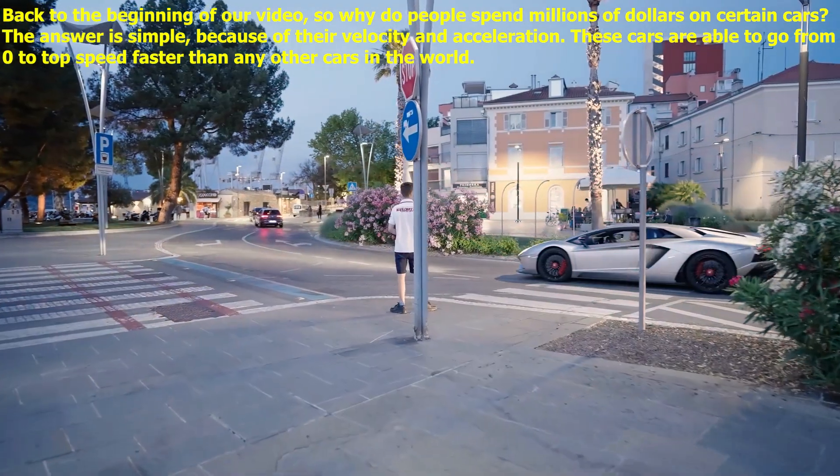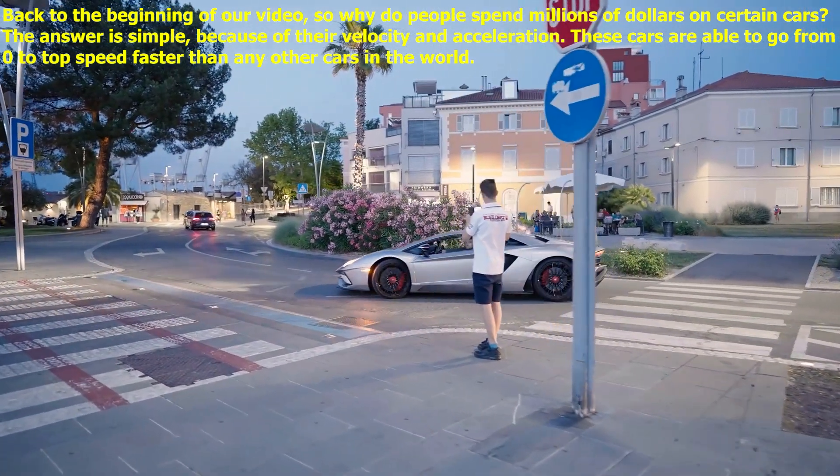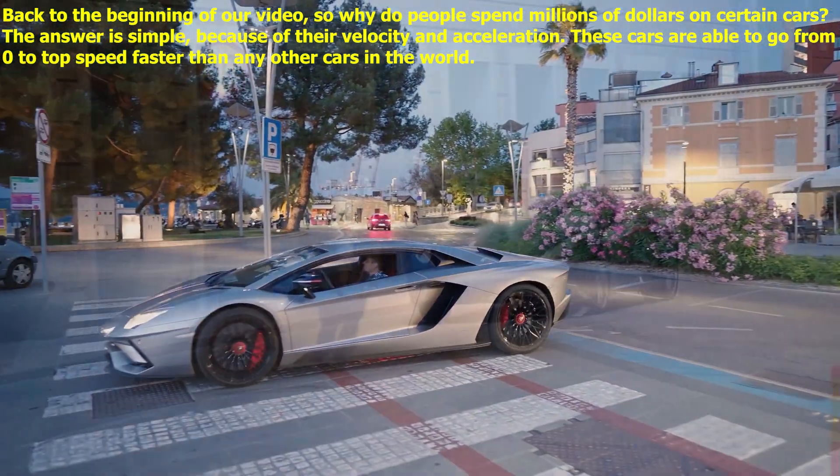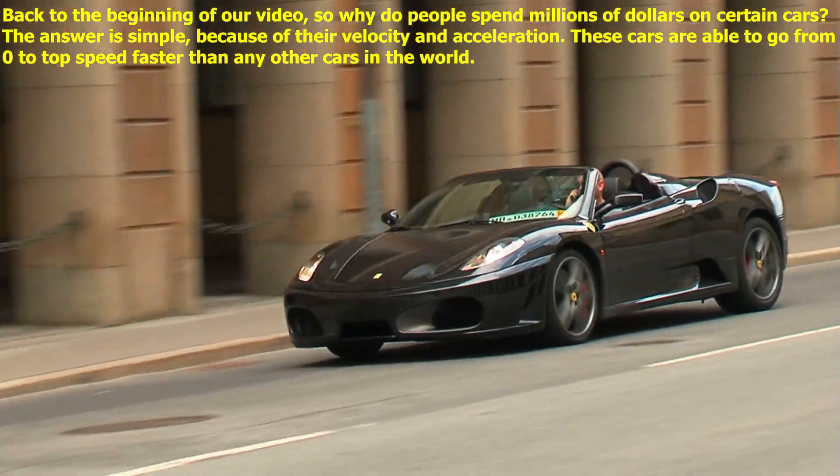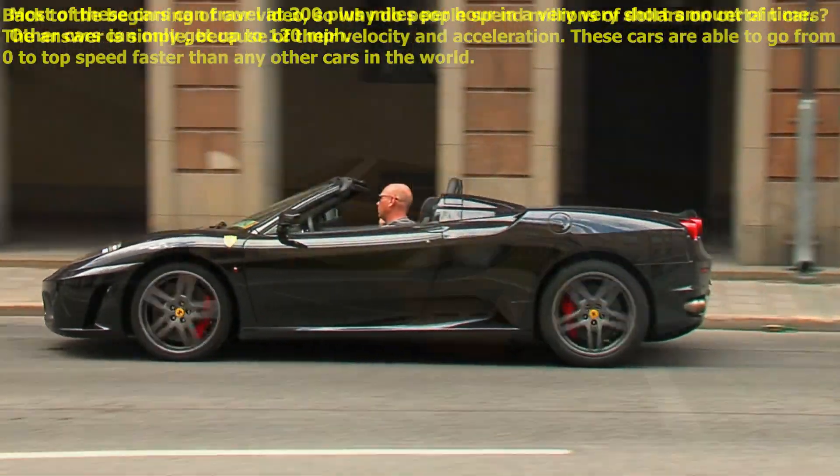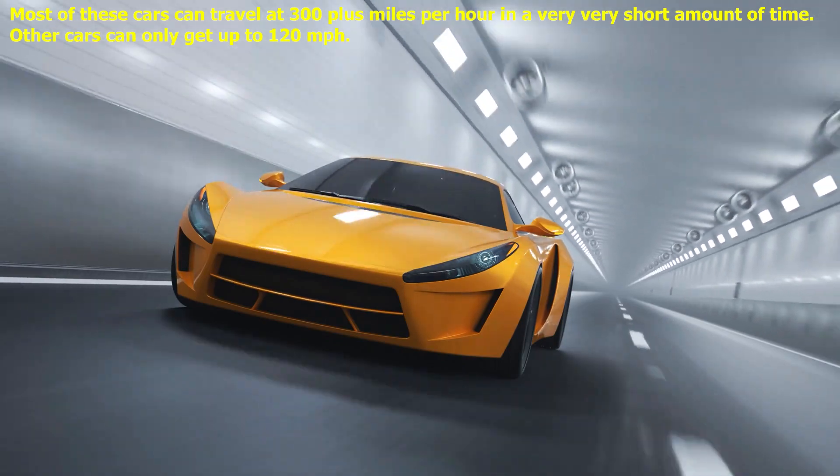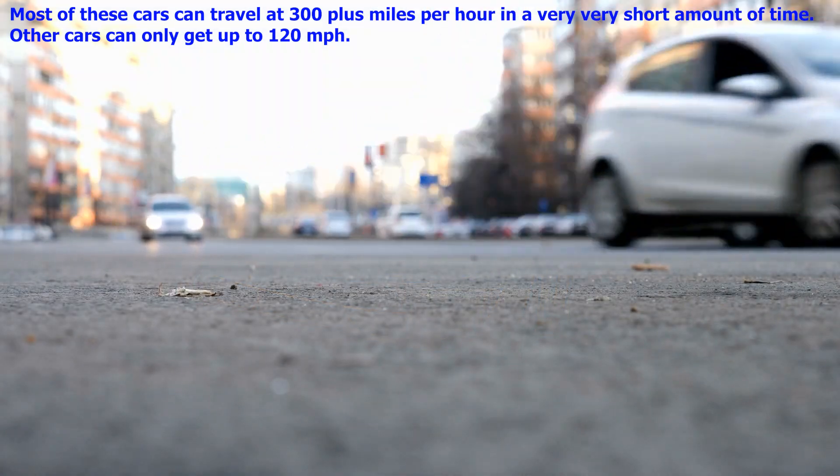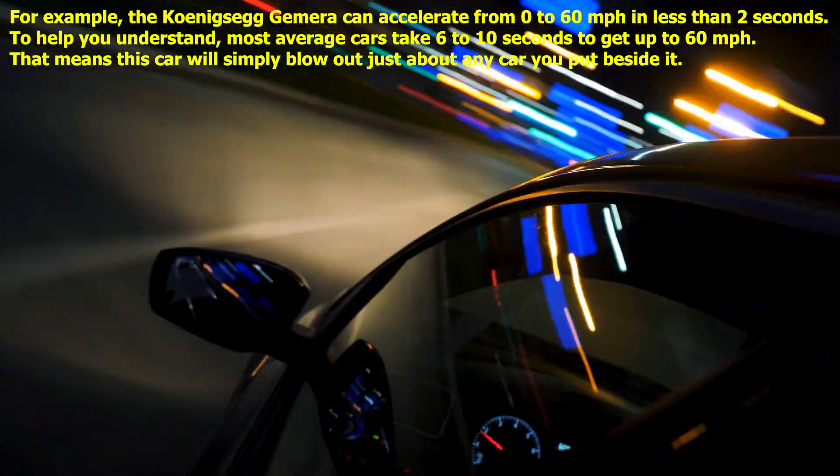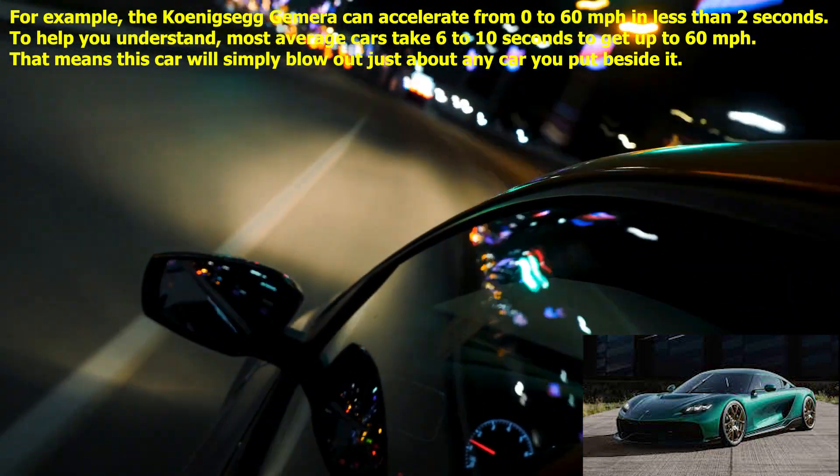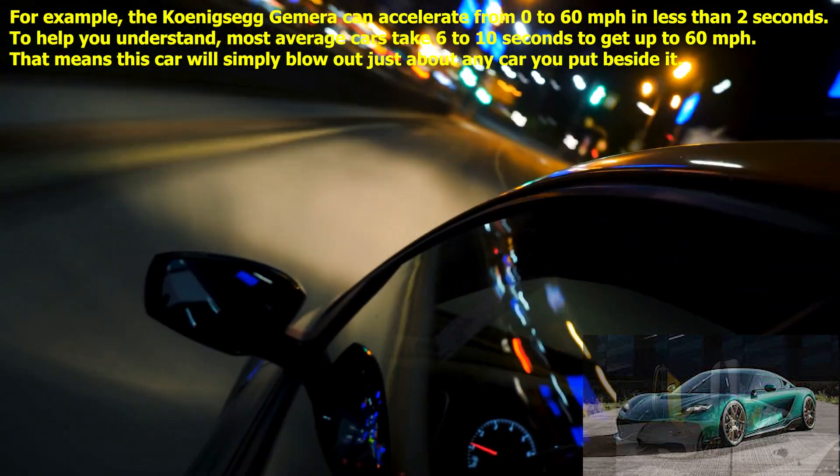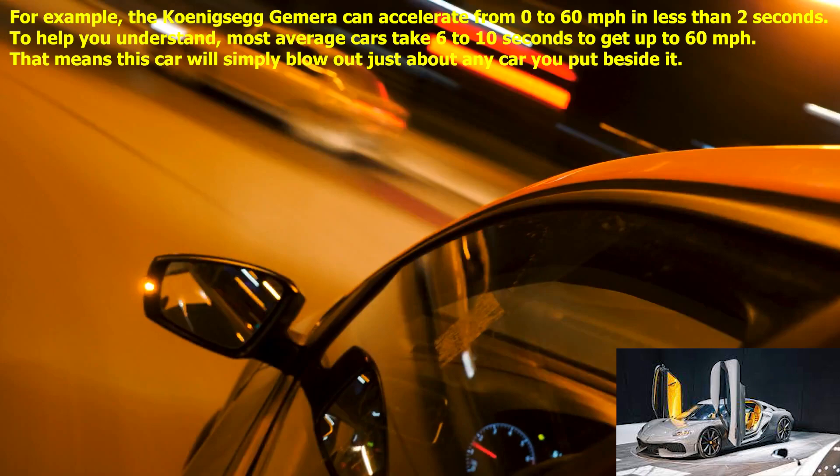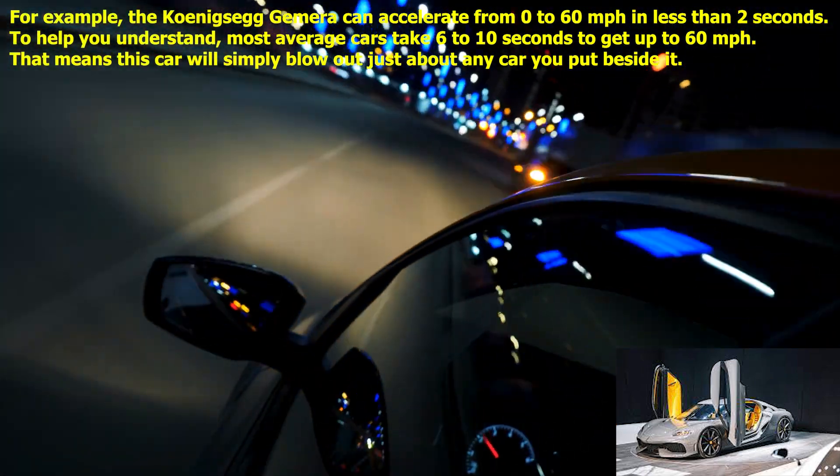Back to the beginning of our video. So why do people spend millions of dollars on certain cars? The answer is simple, because of their velocity and acceleration. These cars are able to go from zero to top speed faster than any other cars in the world. Most of these cars can travel at 300 plus miles per hour in a very short amount of time. Other cars can only get up to 120 miles per hour. For example, the Koenigsegg Jesko can accelerate from zero to 60 miles per hour in less than two seconds. To help you understand, most average cars take six to ten seconds to get up to 60 miles per hour. That means this car would simply blow out just about any car you put beside.